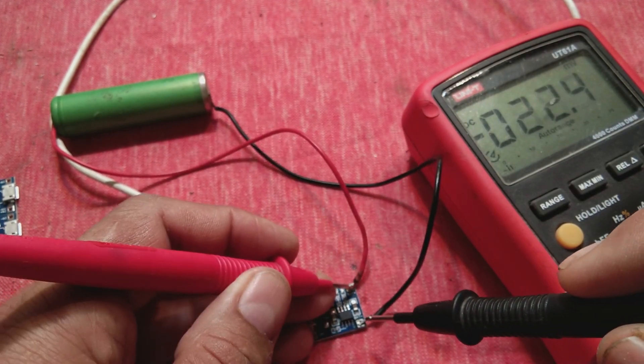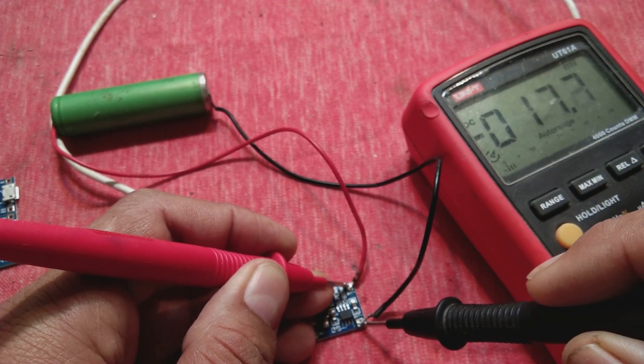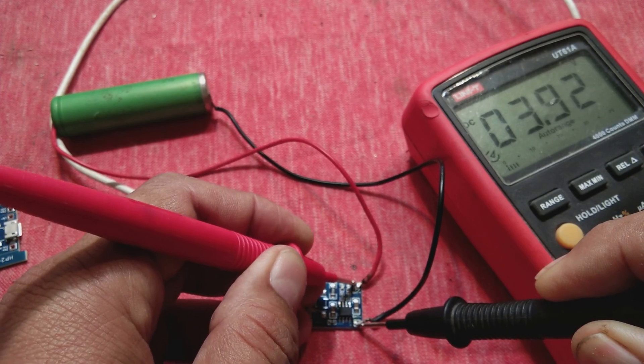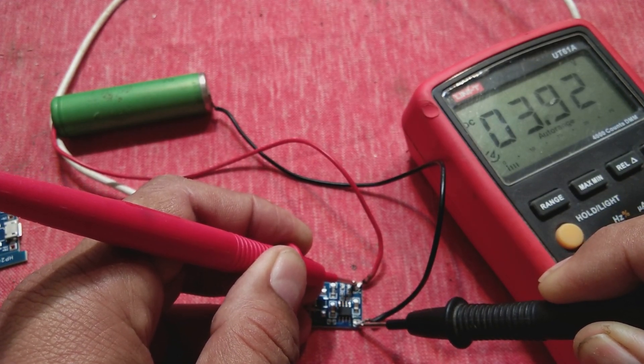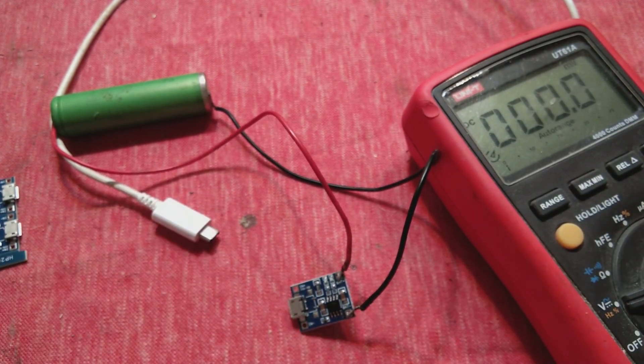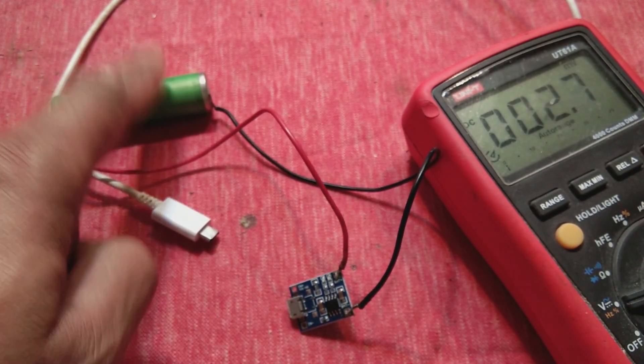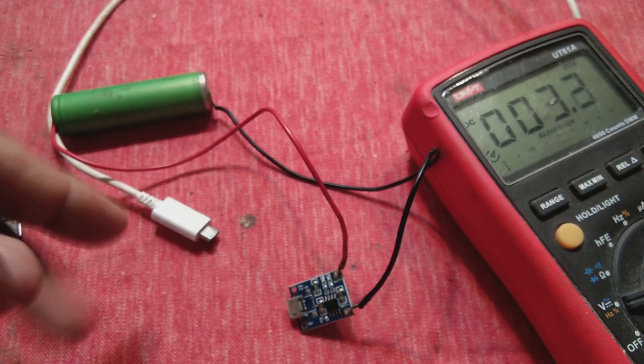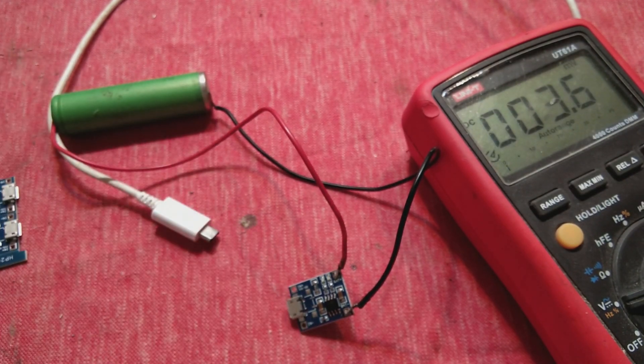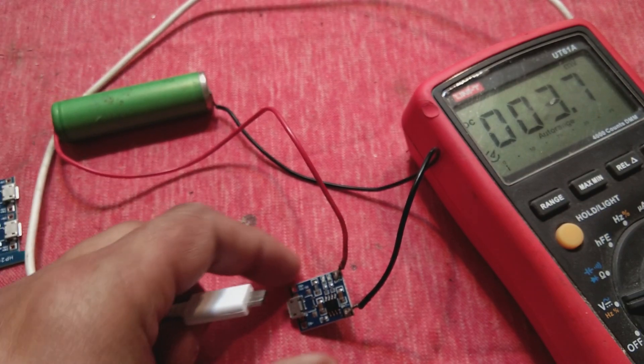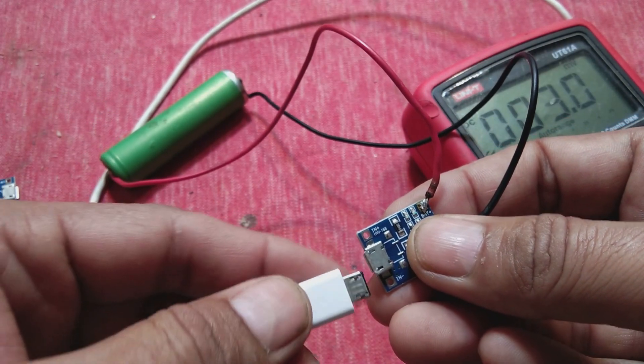At the BAT+ and BAT- terminals, the voltage is about 3.9 volts. To some extent this battery is charged, but it will take a little more charge and then change state. Hopefully it will show us the red indication.